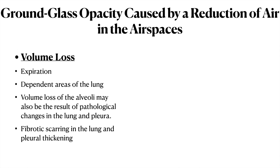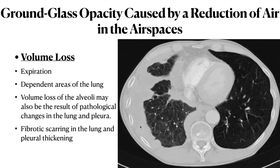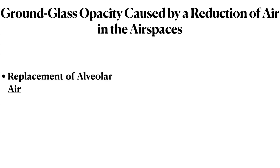Fibrotic scarring and pleural thickening can be a cause of volume loss. Here you can see pathology in the pleura preventing the lung from fully opening up. Comparing both lungs, there is increased attenuation in one part, meaning that particular lung is unable to expand fully and there is a reduction in air in the air spaces — that is the reason for this diffuse ground glassing.